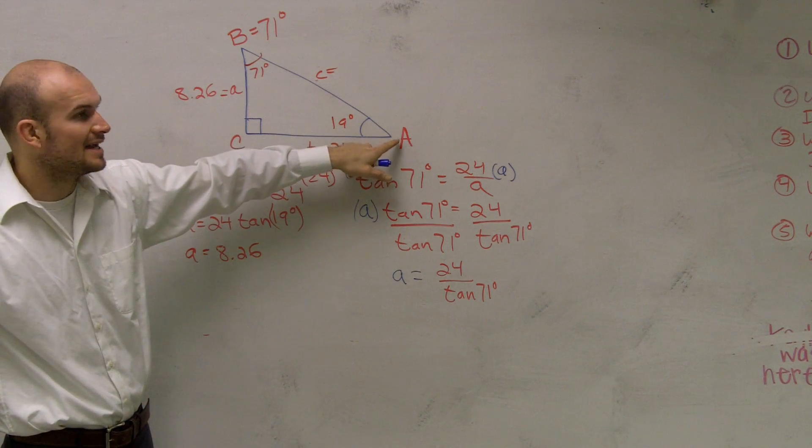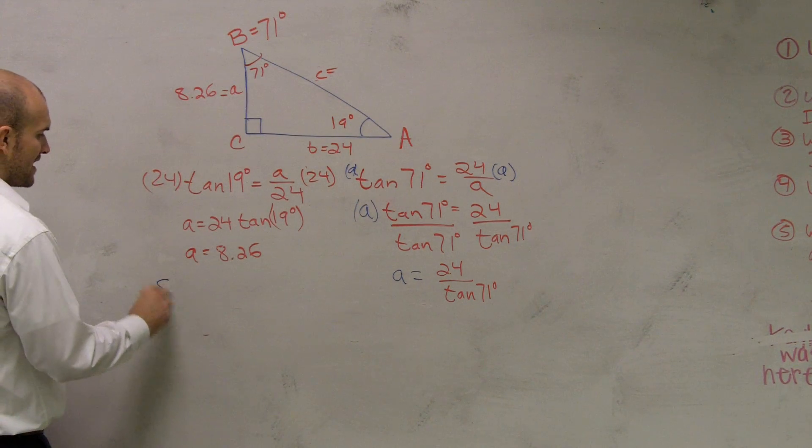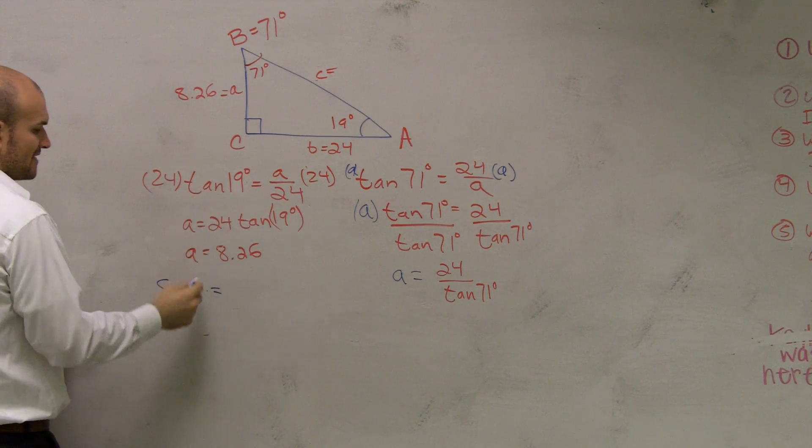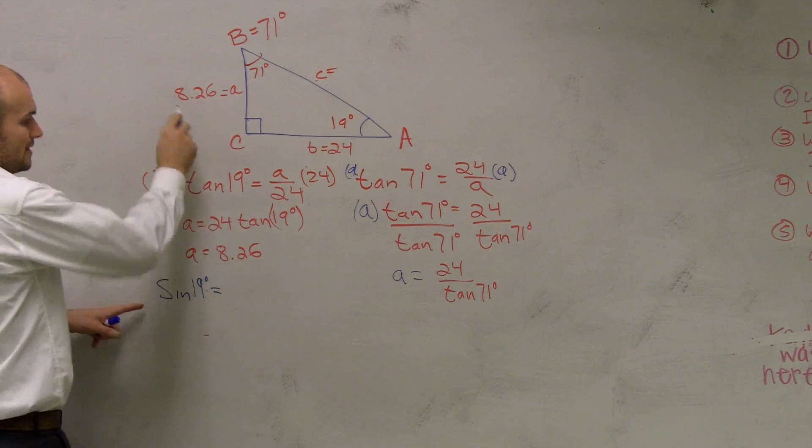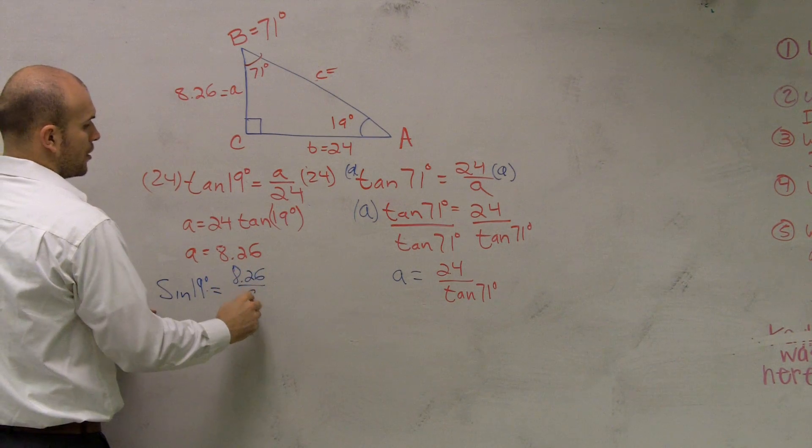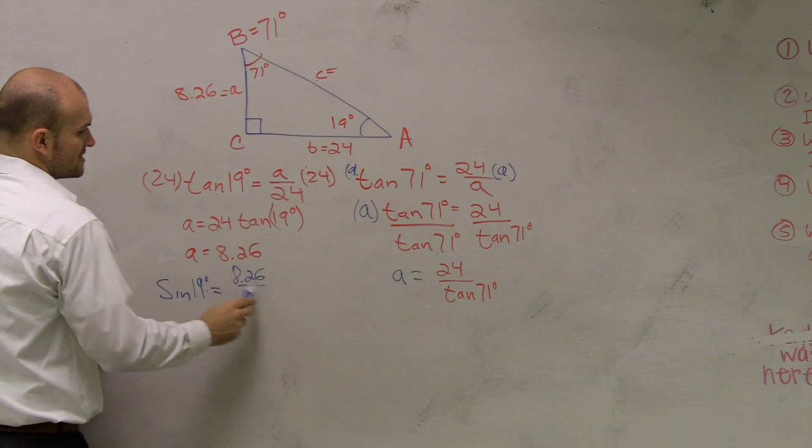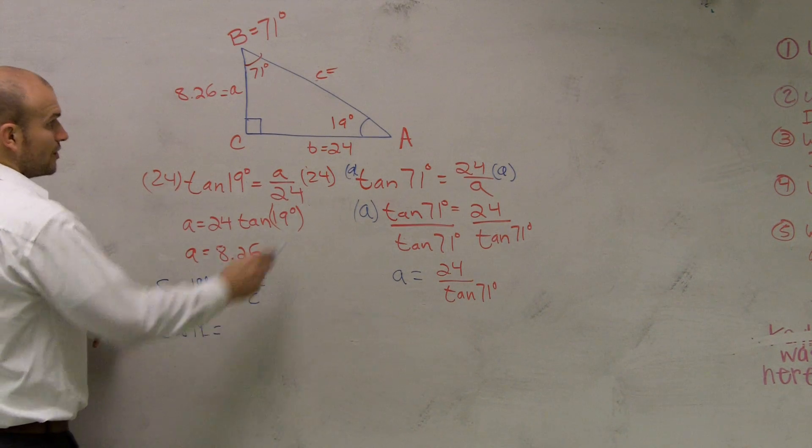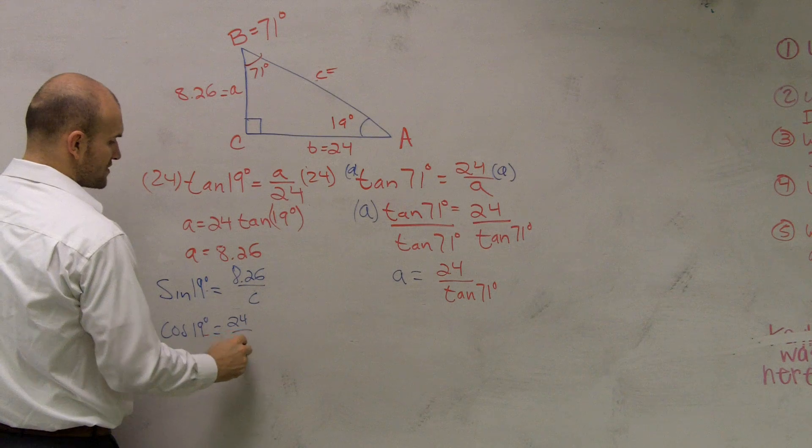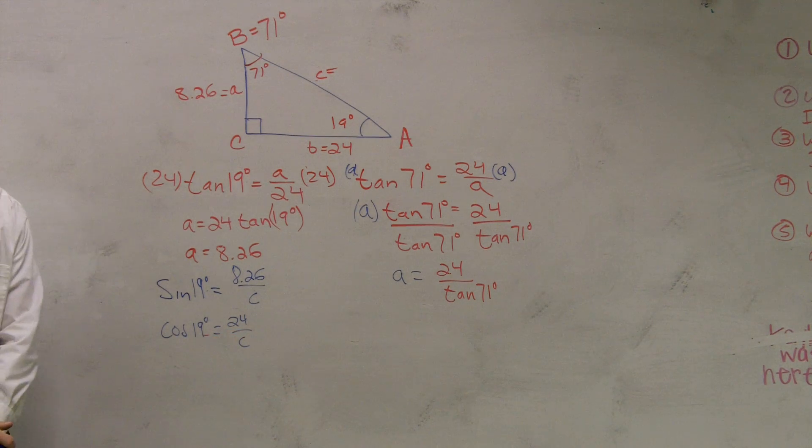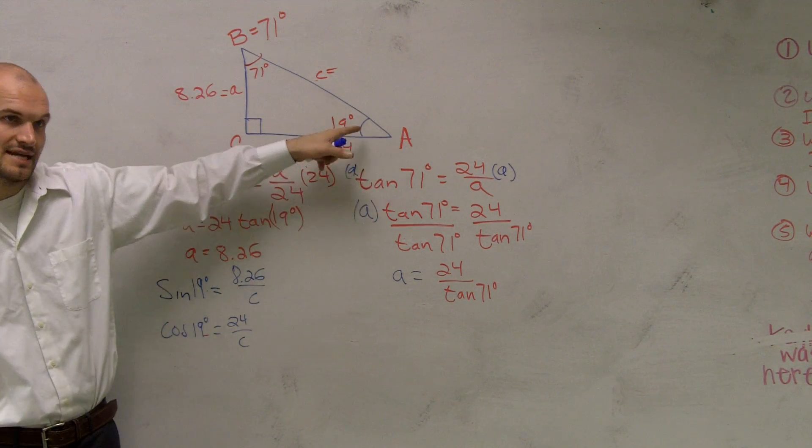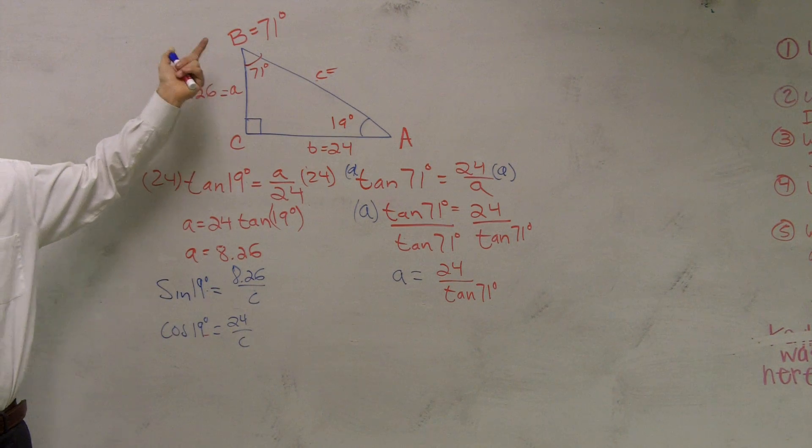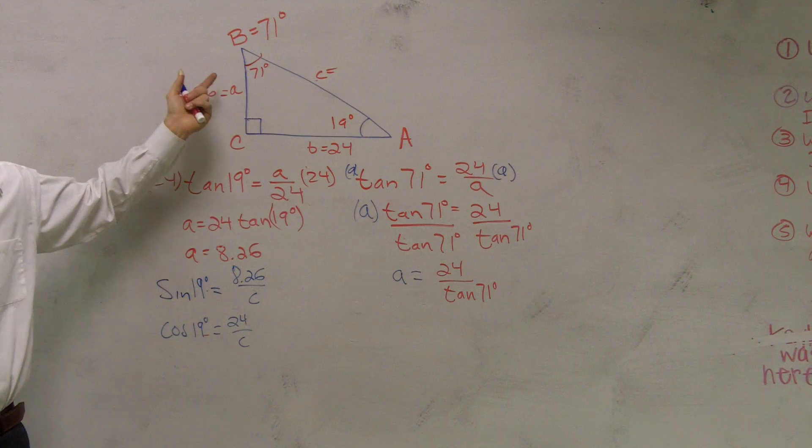If I want to use sine, that's going to be... So I could say sine of 19 degrees equals 8.26 over your hypotenuse, which is C. Or you could say the cosine of 19 degrees equals 24 over C. OK? So if you want to solve it using your angle A, which is 19 degrees, you could use sine or cosine. Or you could use Pythagorean theorem. It doesn't matter. You're going to get the same answer.